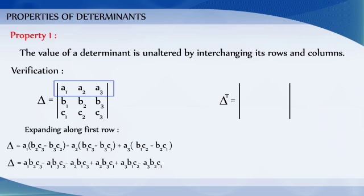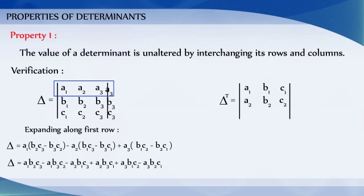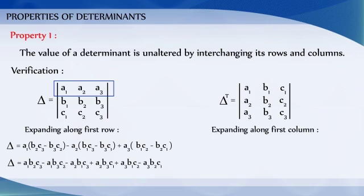Now, interchanging the rows and columns of the determinant, we get the determinant as: a1, b1, c1 in the first row; a2, b2, c2 in the second row; and a3, b3, c3 in the third row. Now expanding along the first column.